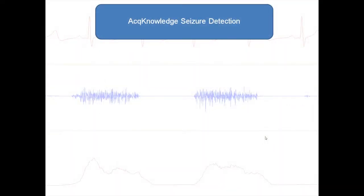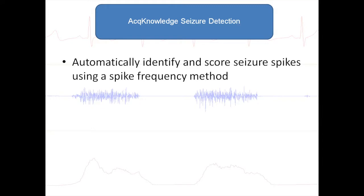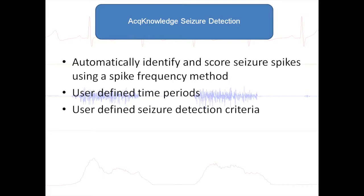This screencast demonstrates the Acknowledged Seizure Detection Utility. The system will automatically identify and score seizures using a spike frequency method. It allows the user to create rules and time windows to determine how many spikes occurred within each epoch. Based upon the user rules, the system will classify whether a seizure occurred within a particular epoch.